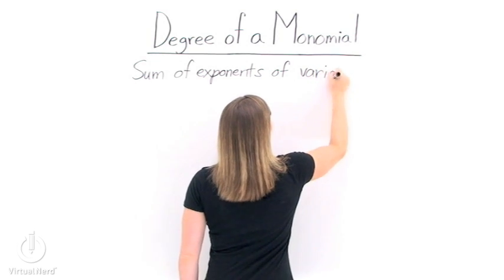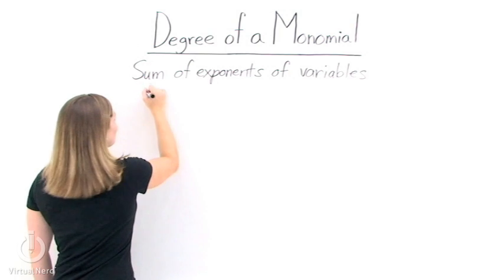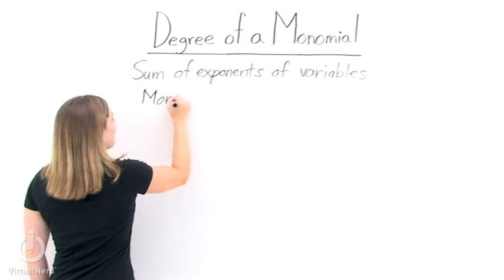So we need to pick out the variables and then just add the exponents together. So let's take some monomials and find the degrees of them.